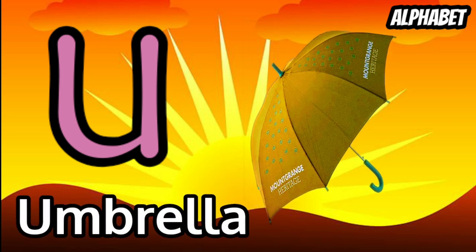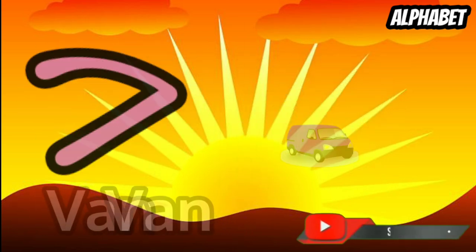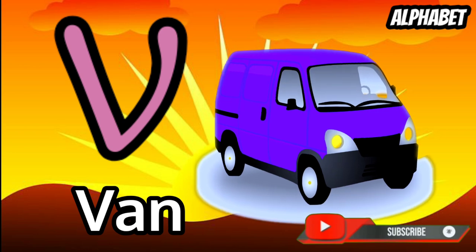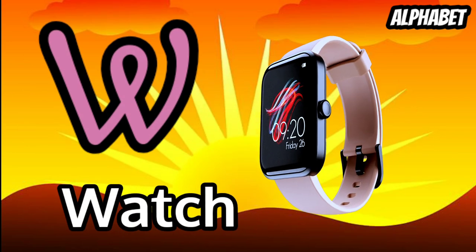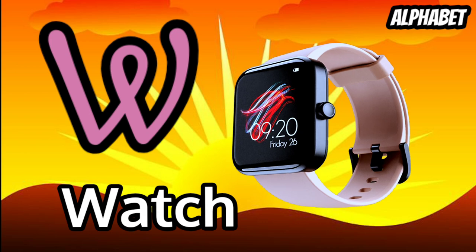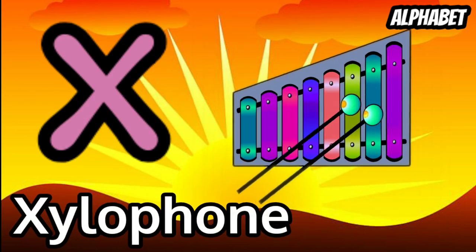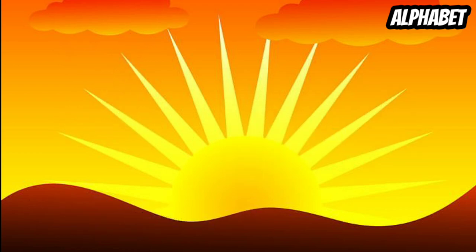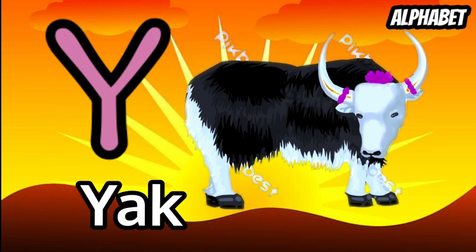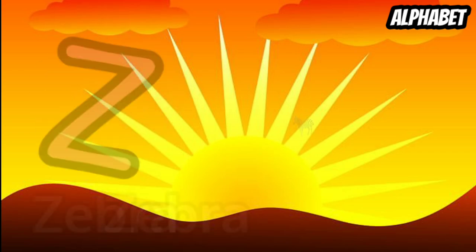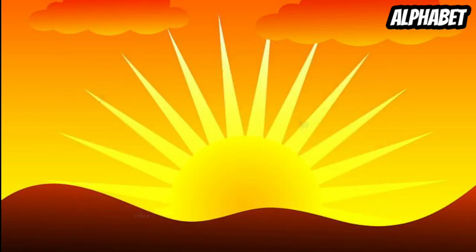U for umbrella, V for when, W for watch, X for jelly, Y for yard, Z for zebra.